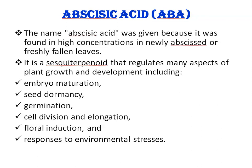Abscisic acid or ABA is one of the classical plant hormones and was first identified in the early 1960s. The name abscisic acid was given because it was found in high concentration in newly abscised or freshly fallen leaves. It is a sesquiterpenoid that regulates many aspects of plant growth and development, including embryo maturation, seed dormancy, germination, cell division and elongation, floral induction, and responses to environmental stresses.